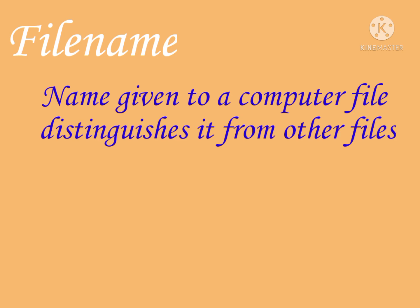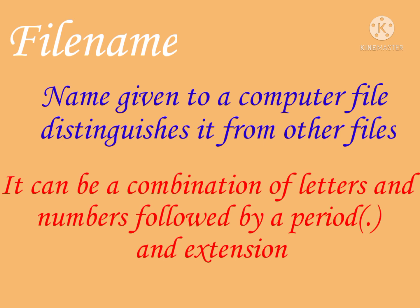First, we can see what a file name is. When you save a file, you give a name to that file — that name is called the file name. The file name will distinguish or identify what type of file it is, or what the content of that file is. The file name can be a combination of letters or numbers, followed by a period — that is a dot — and then an extension. So the full file name is: the name you give, then a dot, then the extension.